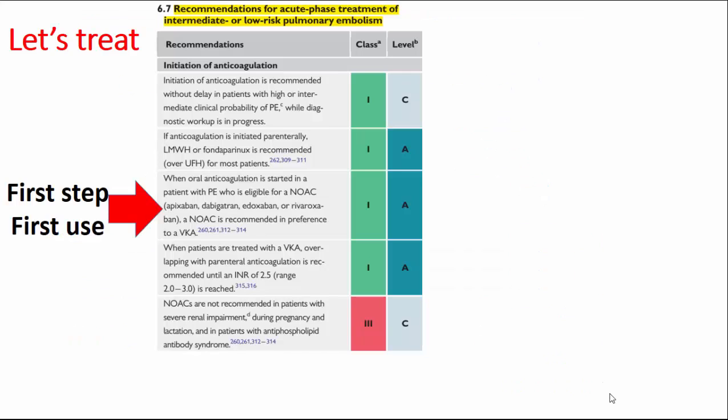These findings drive the initial therapy recommendations: any patient with acute pulmonary embolism should be anticoagulated. Low molecular weight heparin is the initial treatment of choice. NOACs, when indicated, are superior to VKA. If VKA is used, the INR must be maintained above 2.5.